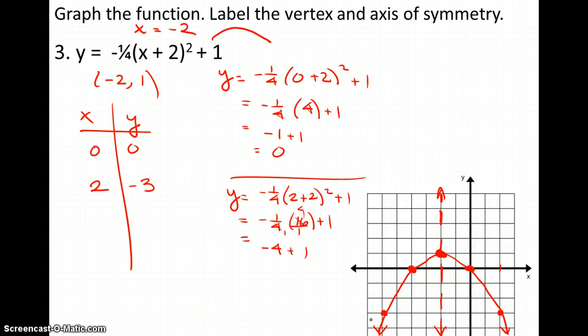For one, we did not label the axis of symmetry, which is x equals negative 2. And then we also didn't do the vertex as well. And that is that for vertex form. Thank you.